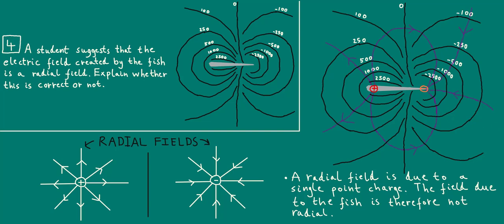A common misconception I find with students is that they often think that in gravitational and electric fields, fields can either be uniform or radial and that there's no other option. In reality, uniform and radial fields are the simplest types of fields. Most realistic fields are neither of those, and this is an example of that. If you found this video useful, please like it, share it, subscribe to the Forest Learn channel if you haven't already, and leave a comment. I'd love to hear from you. Thank you for listening and I hope to see you soon.